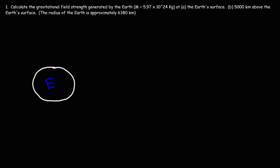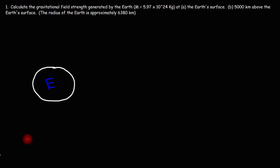Gravity is a force that brings matter together. So if you have an object near the Earth, it will experience a gravitational force that accelerates it towards the Earth. Now we want to calculate the gravitational field strength at the surface.